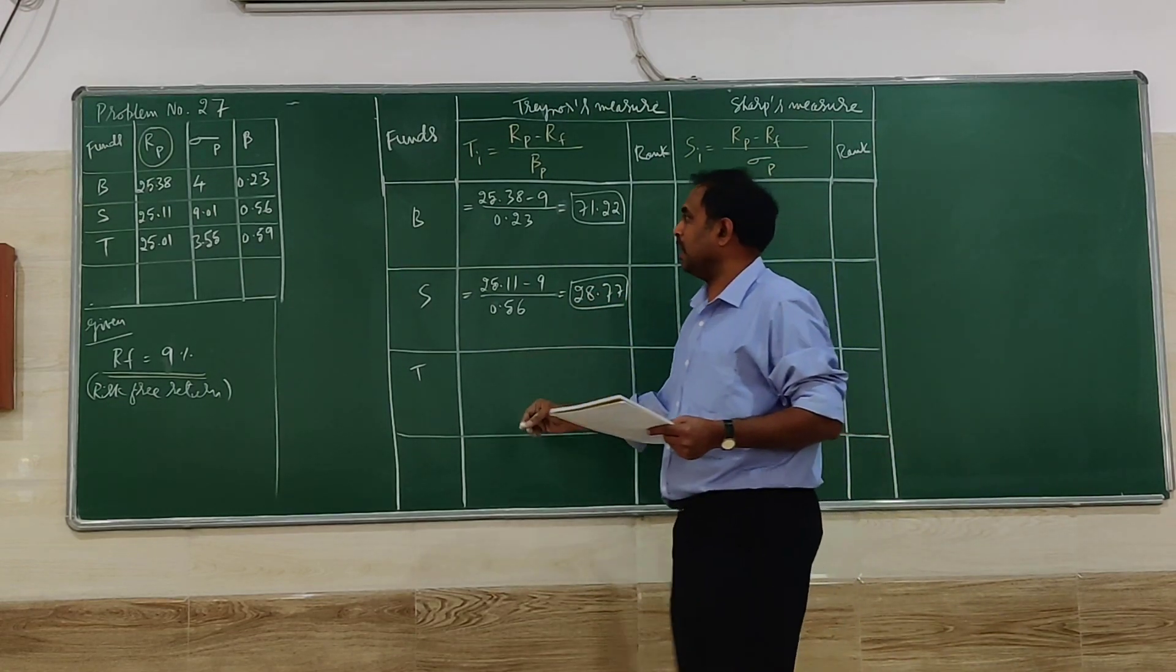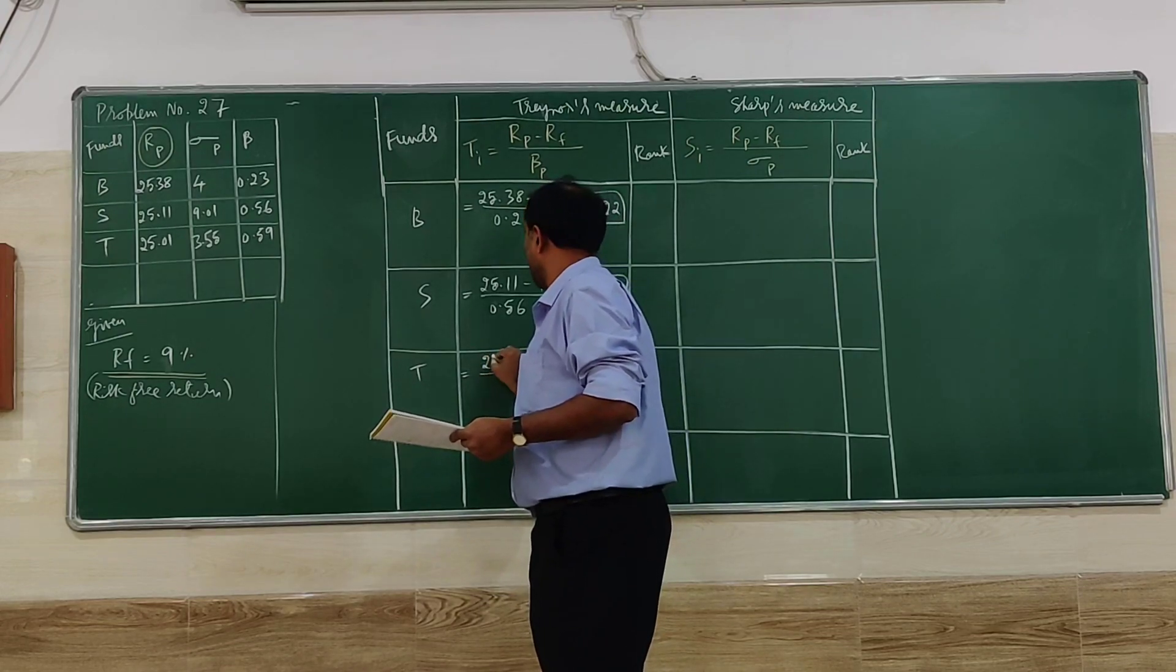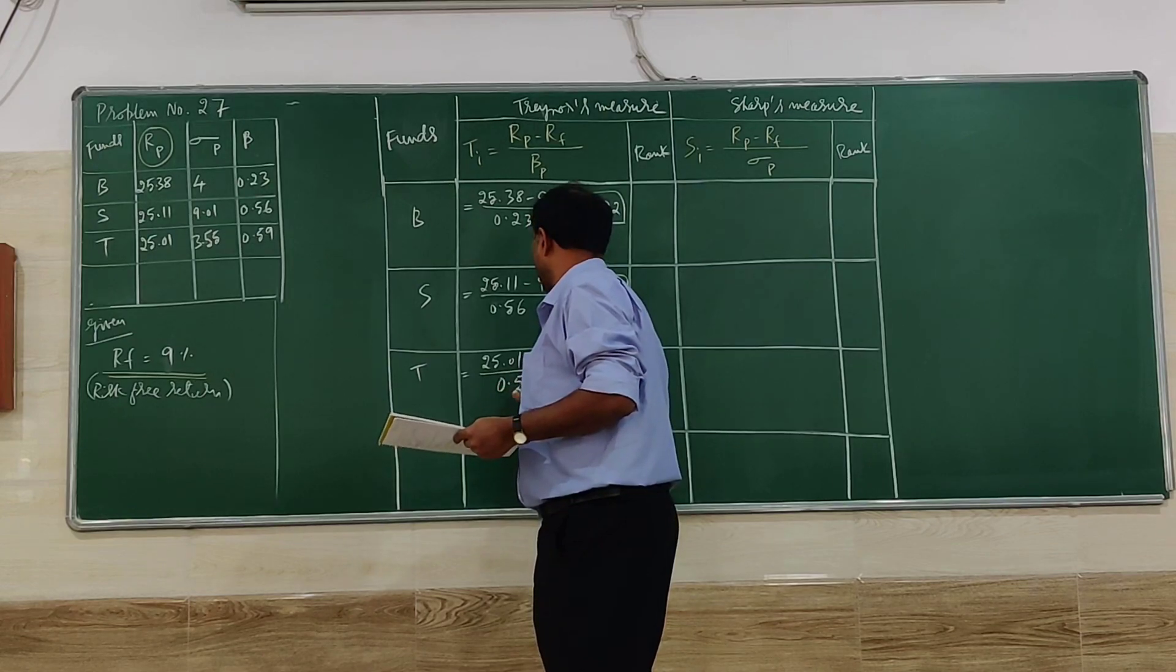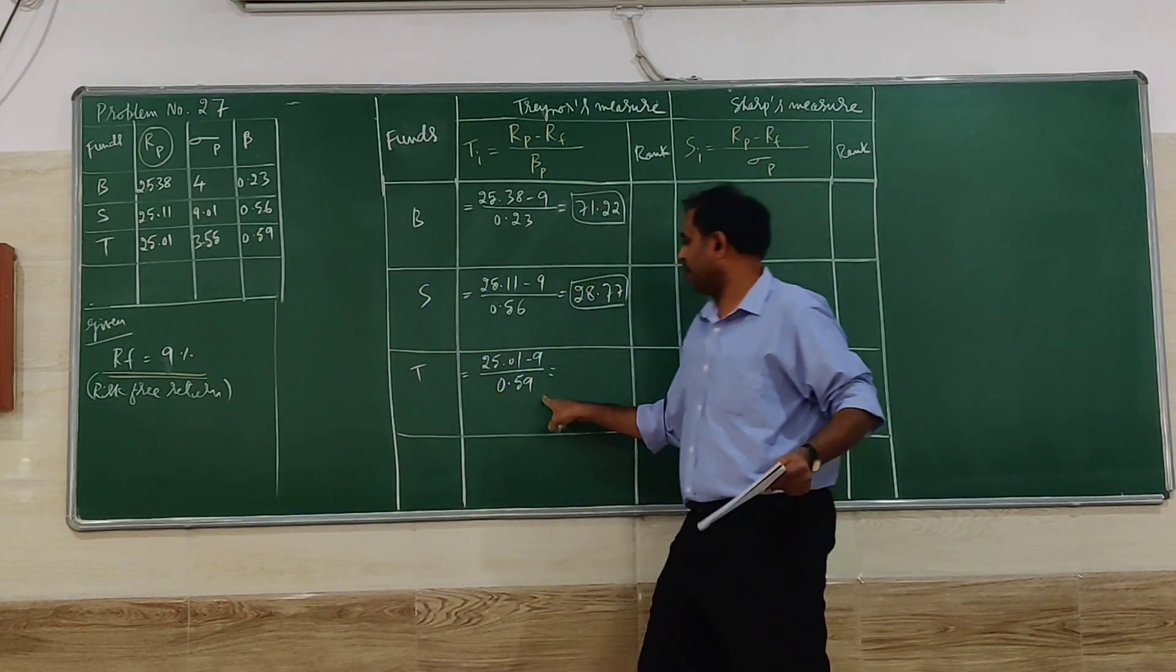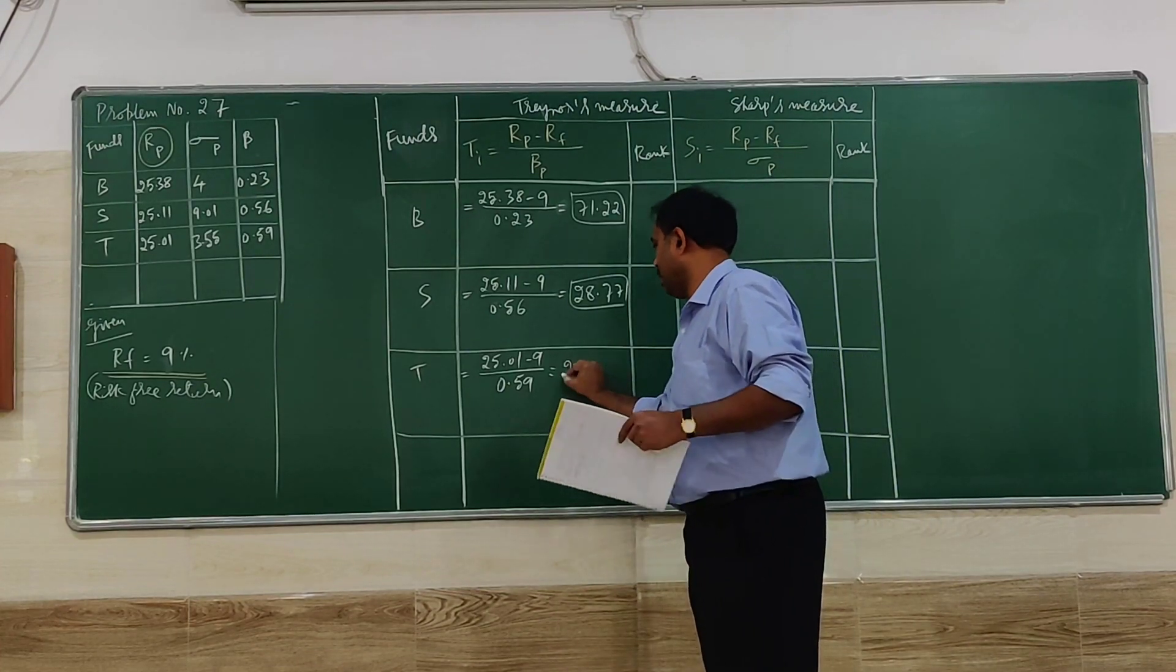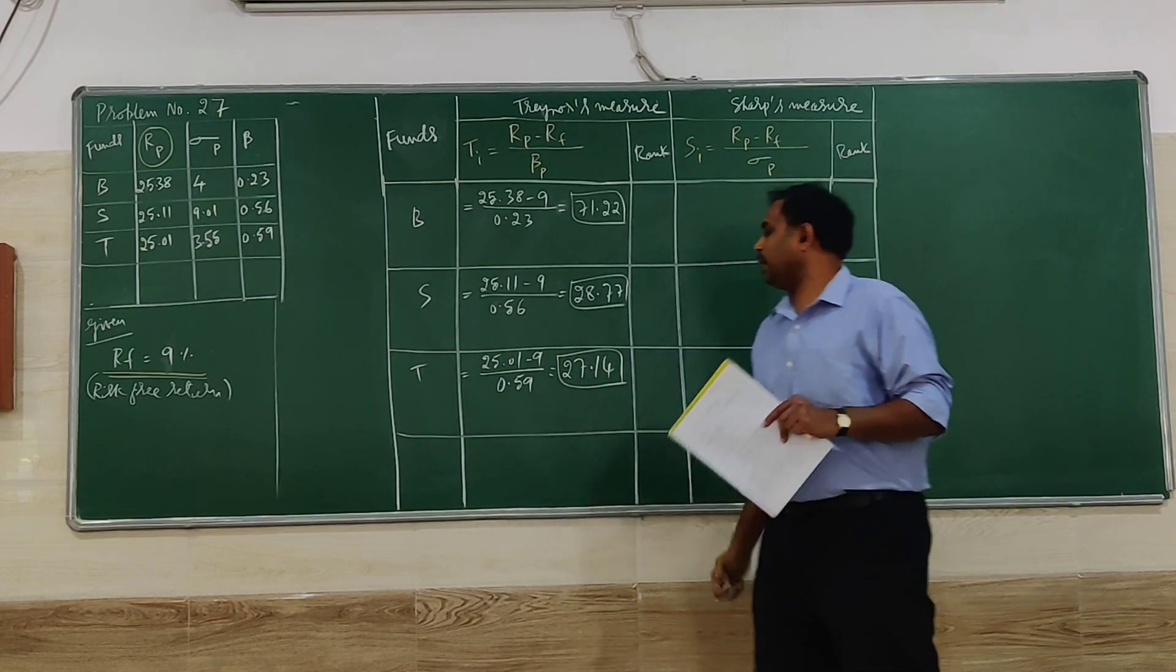Next we go for T, the last in the portfolio. rp is 25.01 minus 9 divided by the beta value 0.59. If you simplify, you will get 27.14.